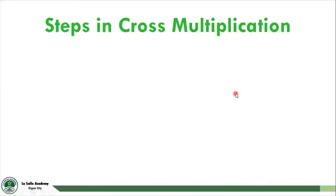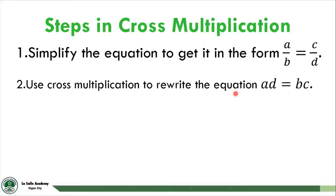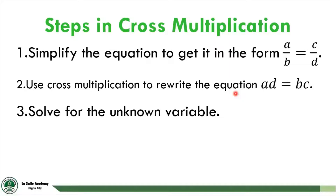To solve rational equations using cross-multiplication, follow these steps. First, simplify the equation to get it in the form a over b is equal to c over d. Next, use cross-multiplication to rewrite the equation as a times d is equal to b times c. Third, solve for the unknown variable. And lastly, check the solution, since there may be extraneous values that arise from solving but do not satisfy the given rational equation.